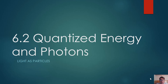This chemistry video is called Quantized Energy and Photons — it's really about light as particles. These videos are done in relation to the chemistry textbook Chemistry: The Central Science, Chapter 6, Section 2. The first section of this chapter, covered in another video, is on light and energy as a wave. In this next section, we're going to talk about light and energy as particles.